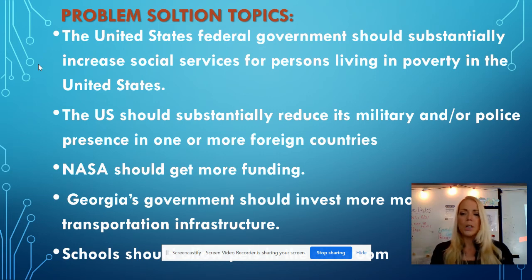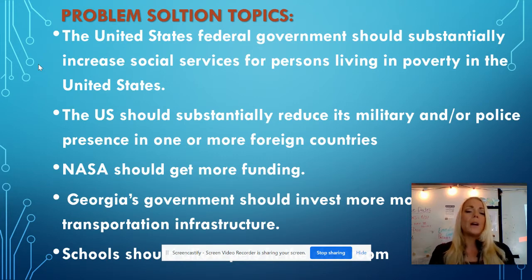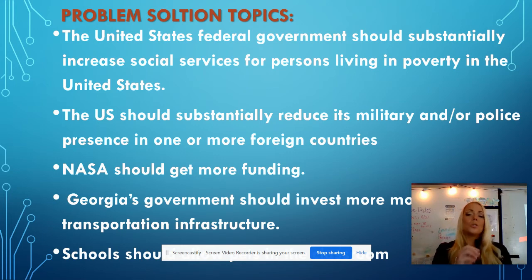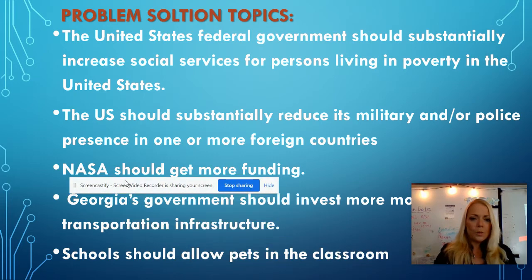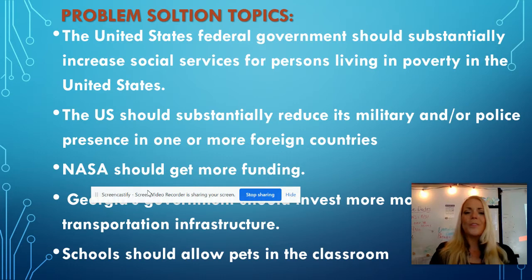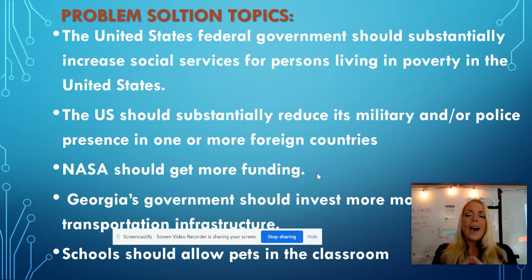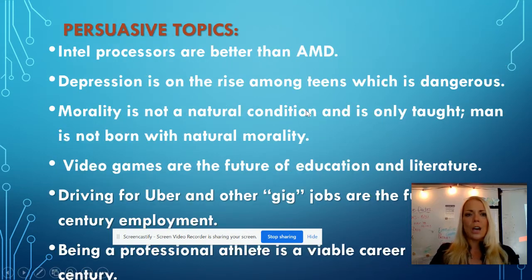'NASA should get more funding' — pretty obvious, the actor is the federal government, and they are giving more money to NASA. 'Georgia's government should invest more money in transportation infrastructure' — that's a state-based topic, and the actor is Georgia. 'Schools should allow pets in the classroom' — a bit more broad in scope, but it's a should statement. You'll notice each of these has a 'should.' If your topic has a 'should' in it, it's probably a problem-solution topic.